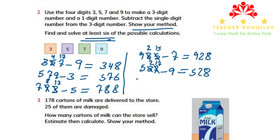The last calculation we can write is 759 minus 3. 9 minus 3 is 6, 5 minus nothing is 5, and 7 minus nothing is 7. So the answer is 756. These are the 6 possible calculations. We can find even more since the book asks for at least 6.